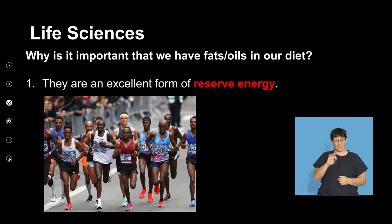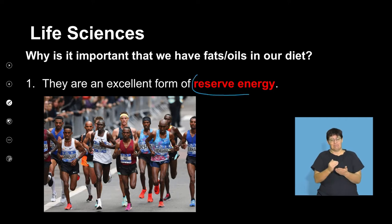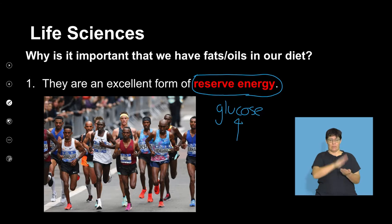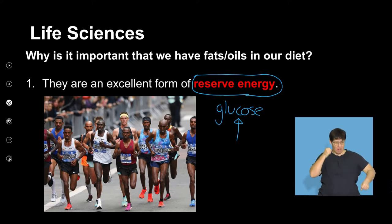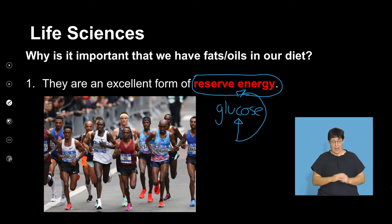Why do we need fat? Let's go through each function. First, reserve energy. Our body's going to use glucose first — that's the instant source of energy. But if we need to carry on, for example if someone is going to run a marathon, our glucose doesn't last. So where does our body go? To our reserve — the fat that we store. Our body doesn't get rid of fats; it just stores it.